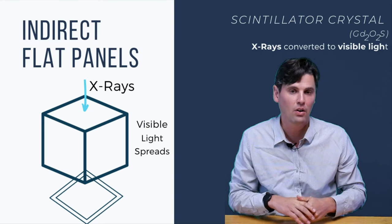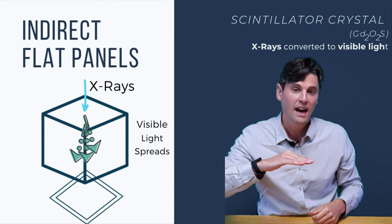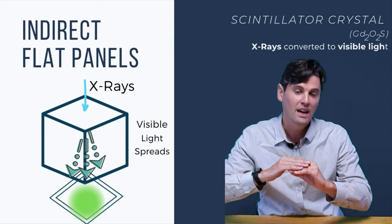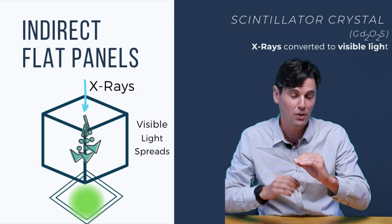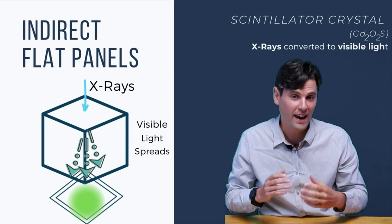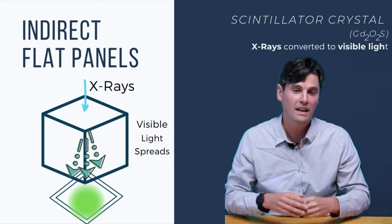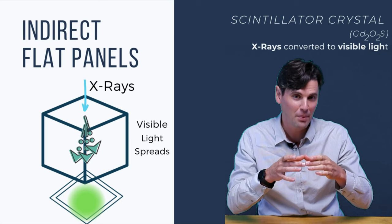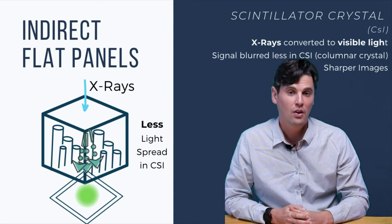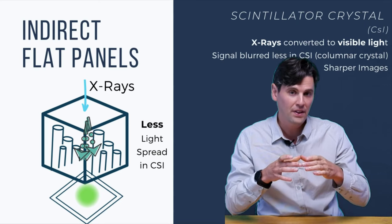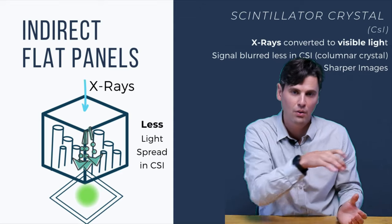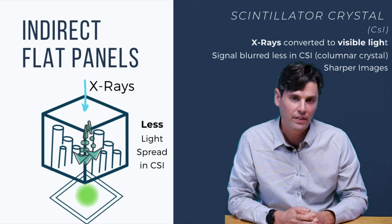In a TFT-based panel, visible light is generated and then converted into a signal using a silicon photodiode. The light interacts with the silicon photodiode and generates a current — an electric analog signal. That analog signal needs to be digitized and separated into individual detector elements. The first option for this is a TFT, or thin film transistor array, which consists of a glass substrate on which components are etched or built, typically based on silicon.